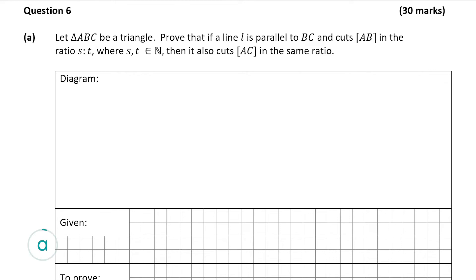Question 6 part A is worth 10 marks and it's a proof. It says: let triangle ABC be a triangle. Prove that if a line L is parallel to BC and cuts AB in the ratio S to T, then it also cuts AC in the same ratio. Sean has a great video on how to answer this proof.